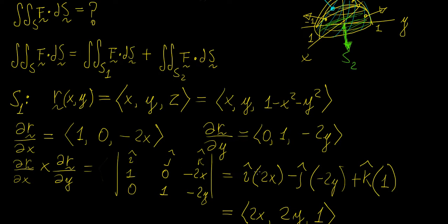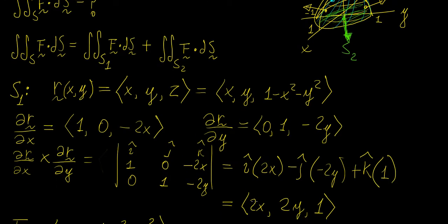For the first element of the cross product we have 0 times that, which is 0, minus −2x times 1, which becomes 2x. For the j-component we get 1 times −2y minus 0. For the k-component we have 1 times 1 minus 0. In the end we can write our expression as (2x, 2y, 1).